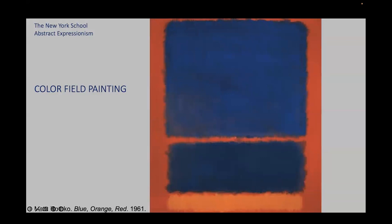Standing in front of Rothko's paintings, they encourage contemplation and introspection — they almost invite you to enter them. Rothko once stated: 'The progression of a painter's work will be toward clarity, toward the elimination of all obstacles between the painter and the idea, and between the idea and the observer.' Blue, Orange, Red exemplifies Rothko's exploration of the emotional and spiritual potential of color, offering the viewer a direct encounter with the power of pure visual sensation.